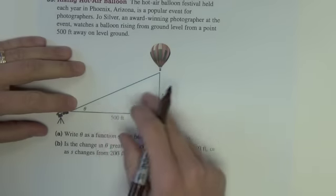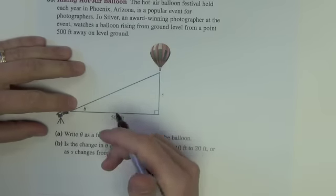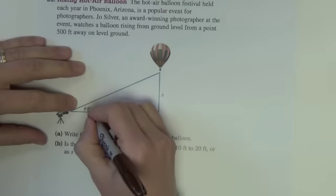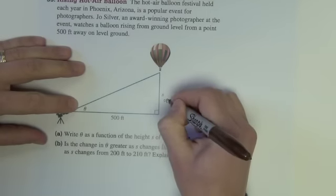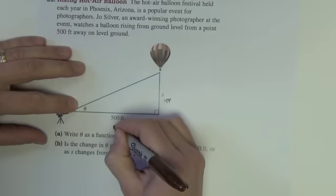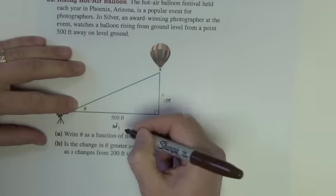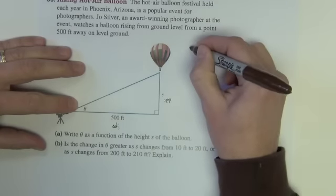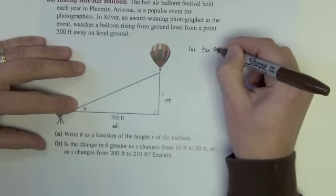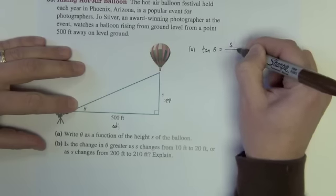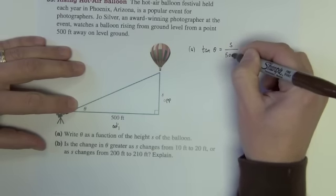Okay, so let's think of the relationship between these variables and sides. The height S is on the opposite side. The 500 is on the adjacent side. So we could say that this is part A, the tangent of our angle is equal to the opposite over adjacent.